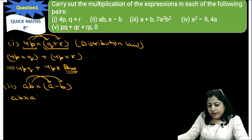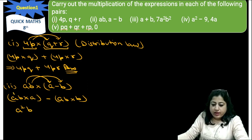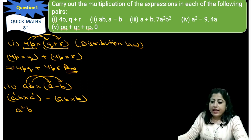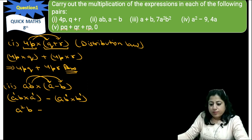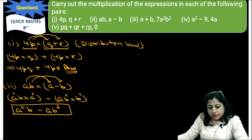ab × a minus ab × b, because there is a minus sign. So it is a²b, because a raised to power 1 times a raised to power 1 — when the bases are same, powers get added. It will be a²b minus b¹ × b¹, giving ab². So it is a²b − ab², which is the required answer — an algebraic expression.